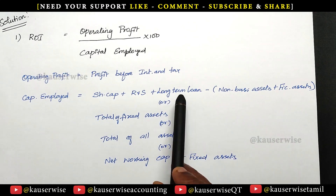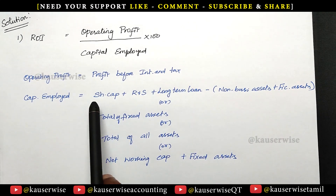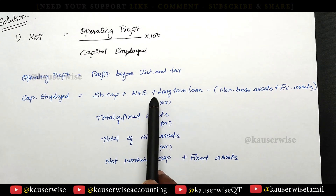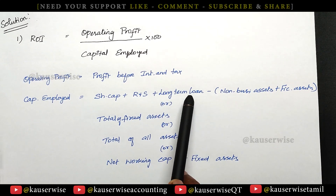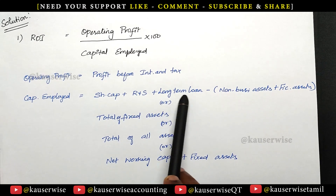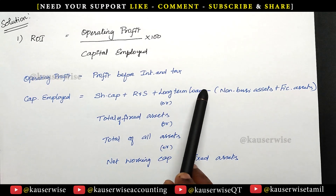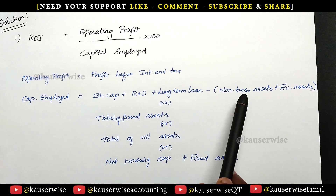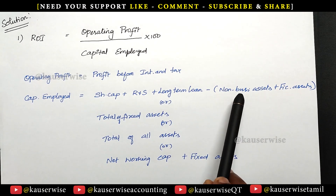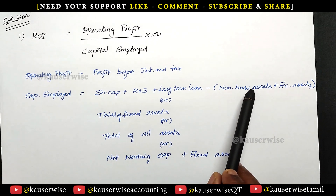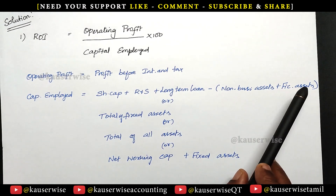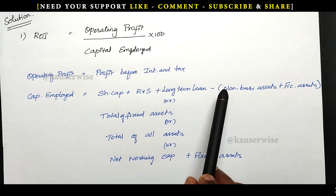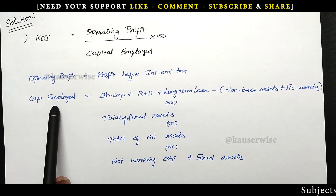I am going to follow the first formula: share capital plus reserves and surplus plus long-term loans, debentures — any long-term borrowings in the problem. Find out the total and subtract if there is any non-business asset in the balance sheet as well as any fictitious asset. These items need to be subtracted, then you will be getting capital employed.